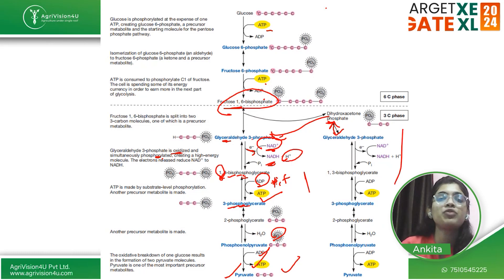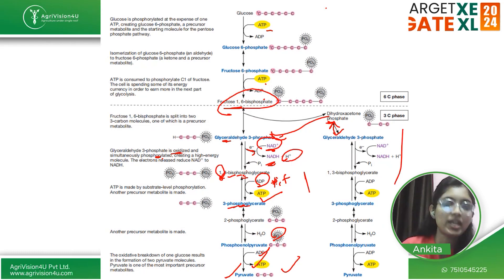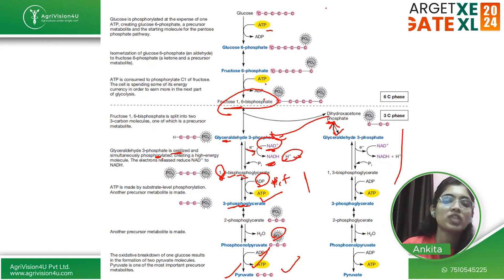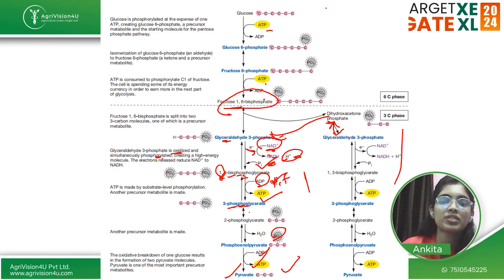Fructose-1,6-bisphosphate leads to formation of glyceraldehyde-3-phosphate and DHAP, which are interconvertible. Glyceraldehyde-3-phosphate is further converted to 1,3-bisphosphoglycerate — it is oxidized with NAD⁺ reduced to NADH + H⁺, and phosphorylated by adding a phosphate group. Then 1,3-bisphosphoglycerate is converted to 3-phosphoglycerate: one phosphate is released and taken by ADP, converting ADP to ATP. Then 3-phosphoglycerate to 2-phosphoglycerate — position change. Then 2-phosphoglycerate to phosphoenolpyruvate — H₂O is removed.